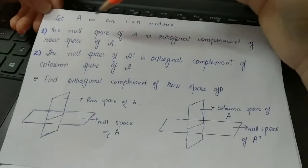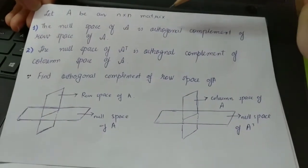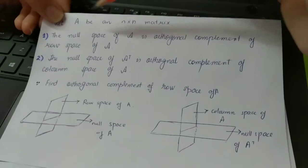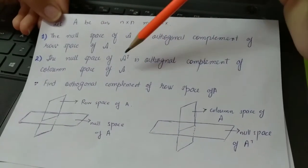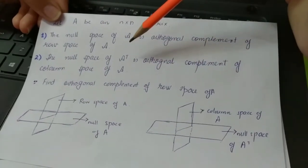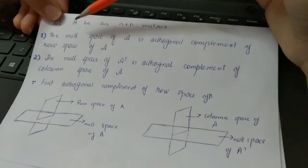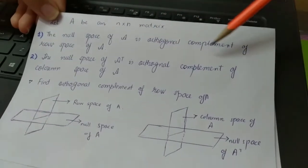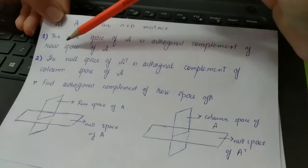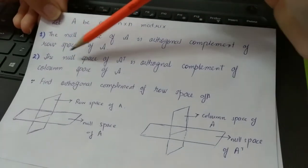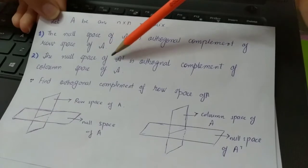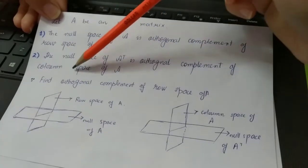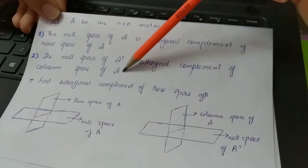Now let A be an n×n matrix. Here are two very important results that often appear in questions: the null space of A is the orthogonal complement of the row space of A, and the null space of A-transpose is the orthogonal complement of the column space of A.